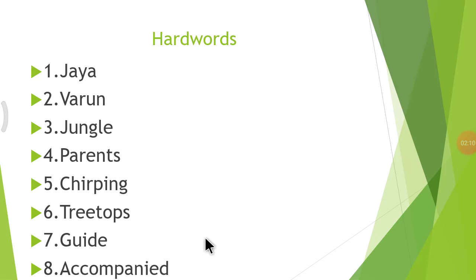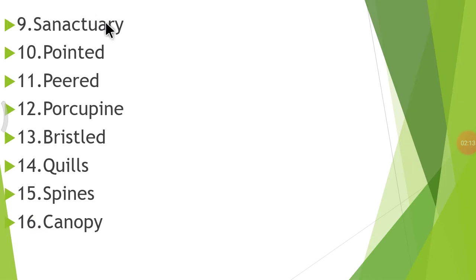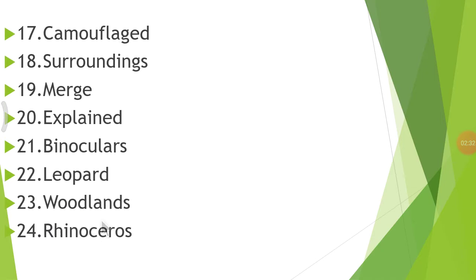Number 9: Sanctuary. Number 10: Pointed. Number 11: Peered. Number 12: Porcupine. Number 13: Bristle. Number 14: Quills. Number 15: Spines. Number 16: Canopy. Number 17: Camouflage. Number 18: Surroundings. Number 19: Merge. Number 20: Explained. Number 21: Binoculars. Number 22: Leopard. Number 23: Woodlands. Number 24: Rhinoceros.